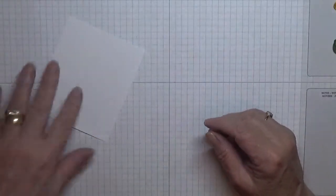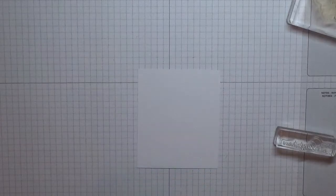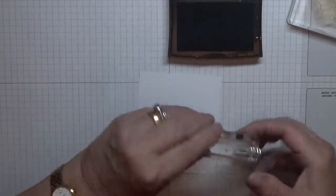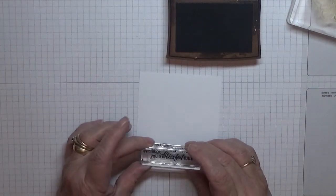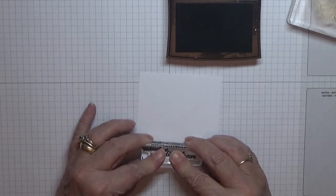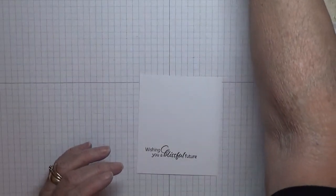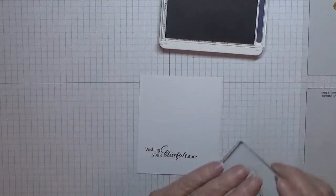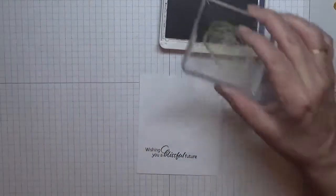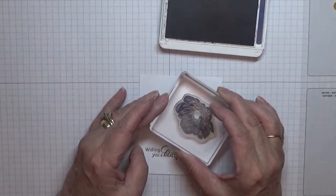So now we're going to stamp our flowers. First, our sentiment first, so I know where my flowers go. 'Wishing you a blissful future.' I am going to stamp just there, like that. And now I have got Night of Navy. I don't know what this is going to turn out like because I've never done these flowers in Night of Navy before, but these flowers are Night of Navy, so ink it up really well. And I'm going to stamp one there.